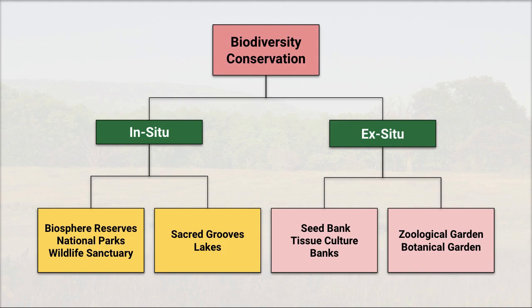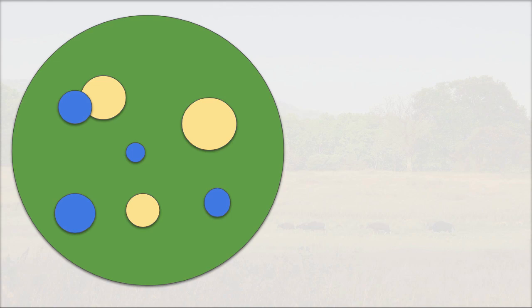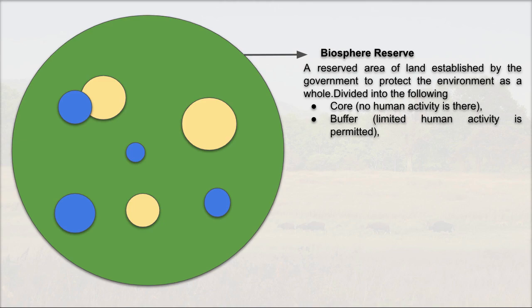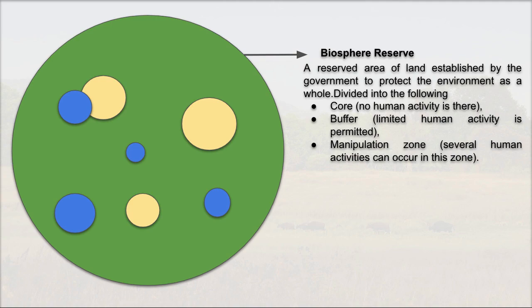Let's see what protected areas mean. You can assume the big circle as the biosphere reserve. Biosphere reserves are established by the government under law and are divided into three areas: first is the core region where no human activity is allowed; second is the buffer region where limited human activities, basically for scientific purposes, are allowed; and third is the manipulation zone where many human activities are allowed.